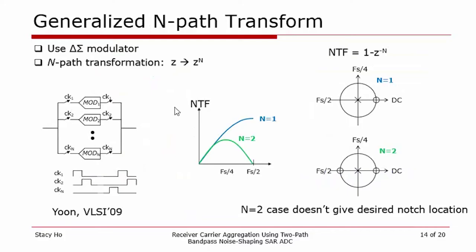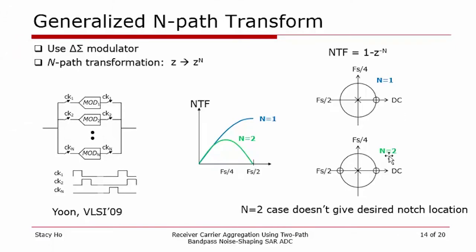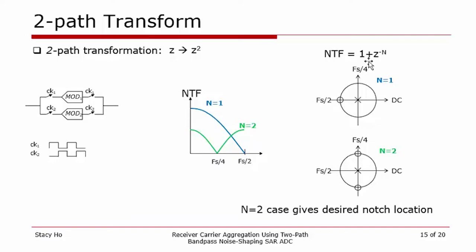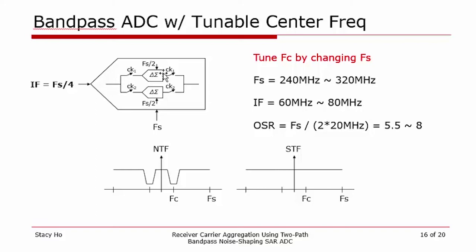Now let's turn our attention to implementing the band-pass ADCs, using delta-sigma modulators and the principle of the generalized n-path transform. In the n-path transformation, all Z terms are replaced by Z to the n, accomplished in practice by time-interleaving n paths. We are interested in creating a band-pass noise transfer function with a notch at FS/4. Starting with NTF equal to 1 plus Z to the minus 1 and setting n equal to 2, the desired notch is achieved at FS/4. Thus we now have a band-pass ADC architecture with two time-interleaved delta-sigma modulators, each with NTF of 1 plus Z to the minus 1, with the signal band centered at FS/4 and each ADC clocked at FS/2.